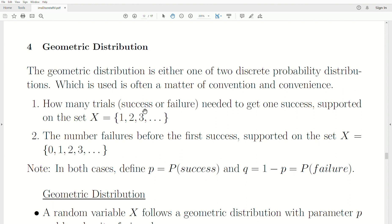Number one: how many trials, success or failure, is needed to get one success? The support is on the set X, which is 1, 2, 3, etc., right? We could have a success after the first trial, or the second, or the third, etc. And this is actually the geometric distribution that we're going to use in this video.